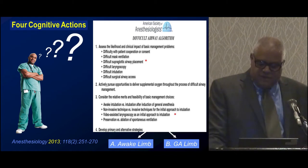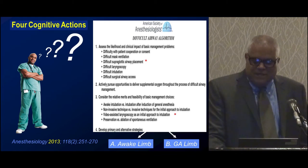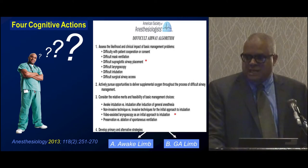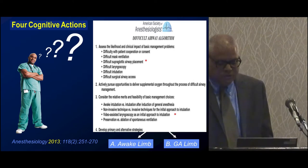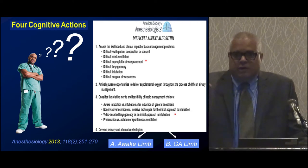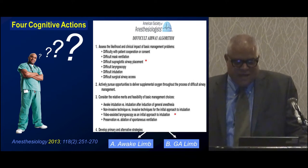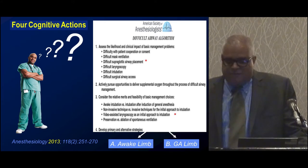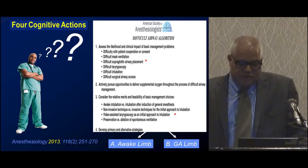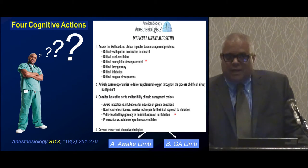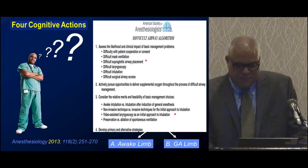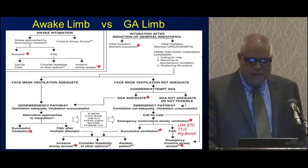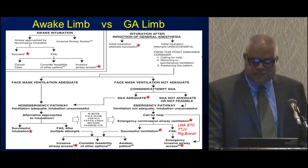Three other cognitive areas include: Can you continuously deliver supplemental oxygen? There's good evidence this improves outcomes even when airways deteriorate into emergent situations. Should you intubate awake or keep the patient asleep? Is there any benefit to non-invasive techniques? Should you consider a video laryngoscope? And should you obliterate spontaneous ventilation or allow the patient to breathe spontaneously? There are two limbs to think about: the awake limb, and the asleep limb—intubation after induction of general anesthesia.